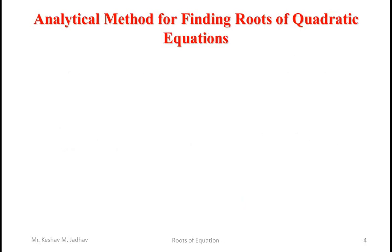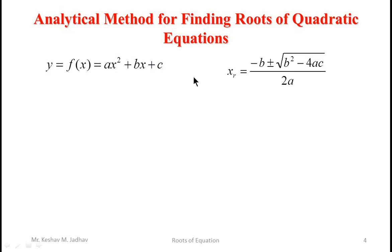Let us see another method for finding the root of quadratic equations. Consider a quadratic equation of the form y equal to f of x equal to ax squared plus bx plus c. The root of such a quadratic equation can be found using the formula: xr equals minus b plus or minus square root of (b squared minus 4ac) divided by 2a.